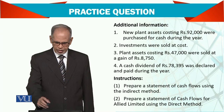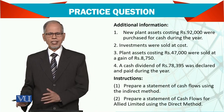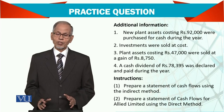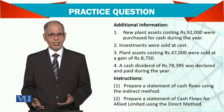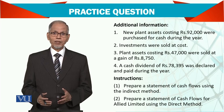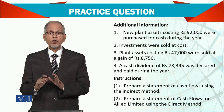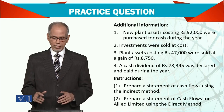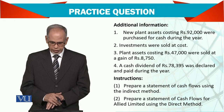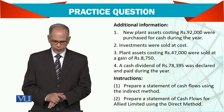Investments were sold at cost — if there is a decrease in investment it means they were sold. The question is at what price. Since it says cost, there is no profit on the sale of this investment. The plant costing 47,000 was sold for 8,750.